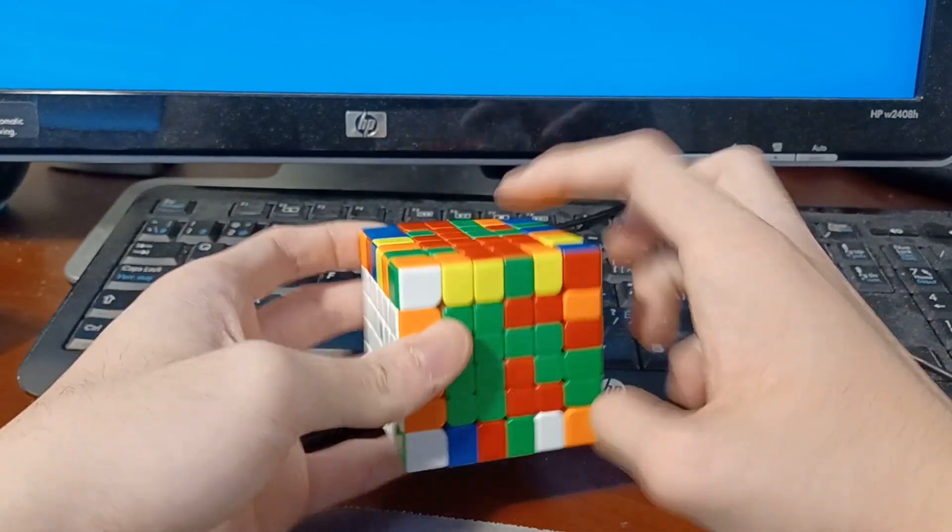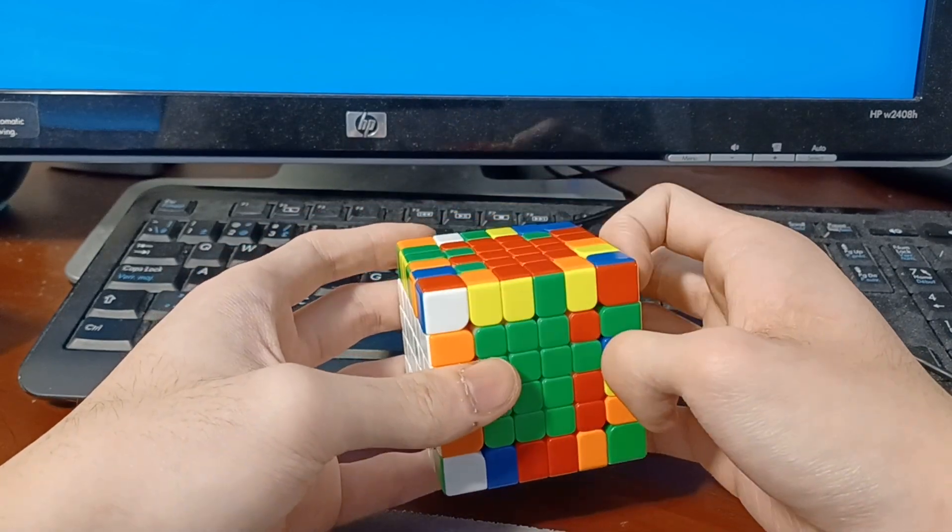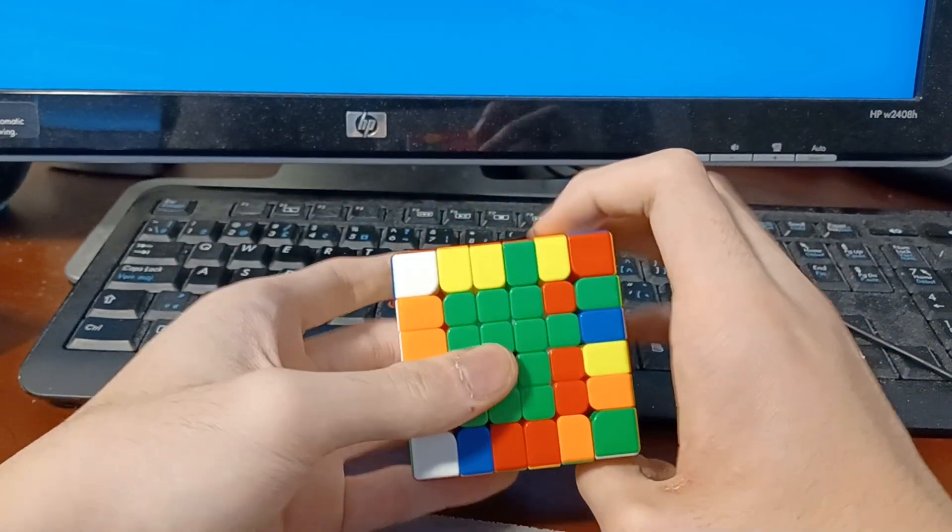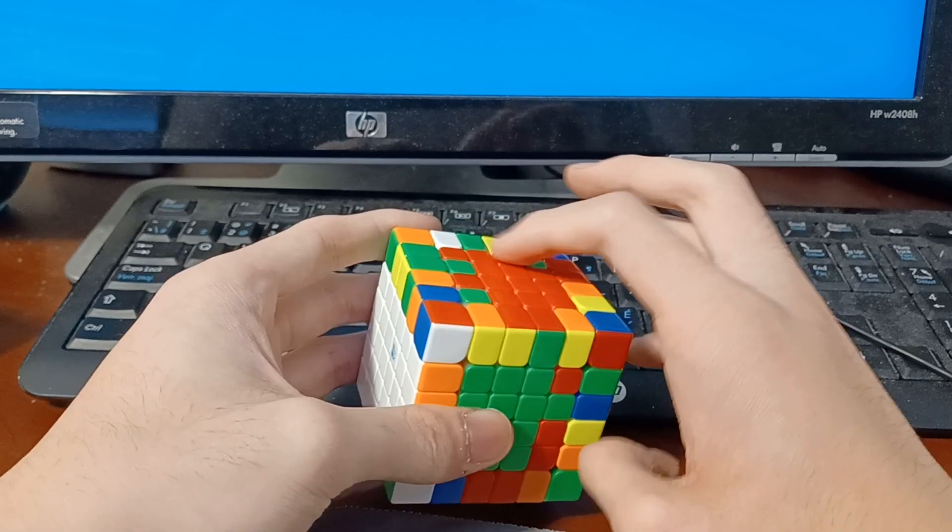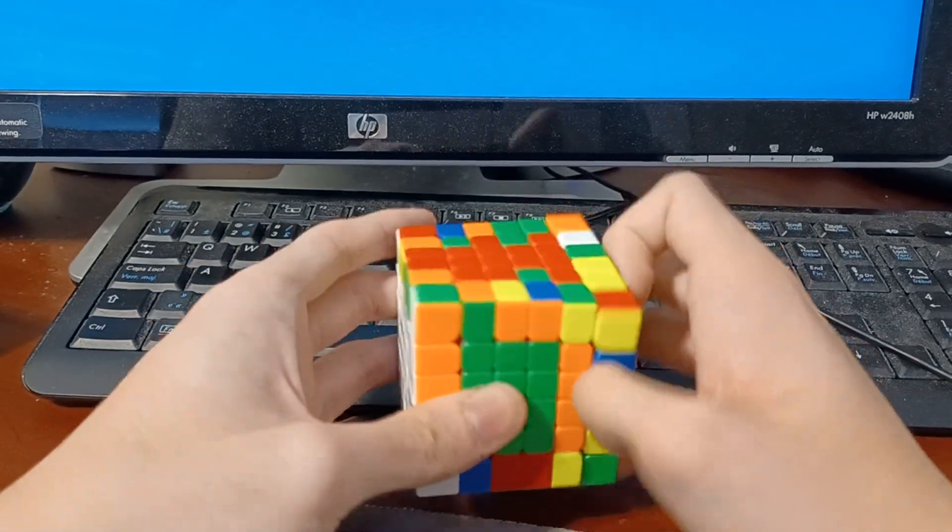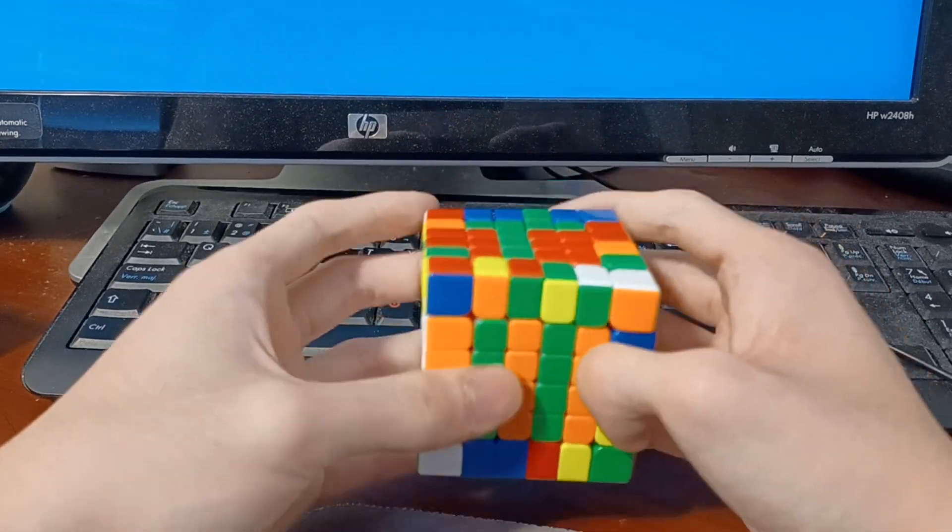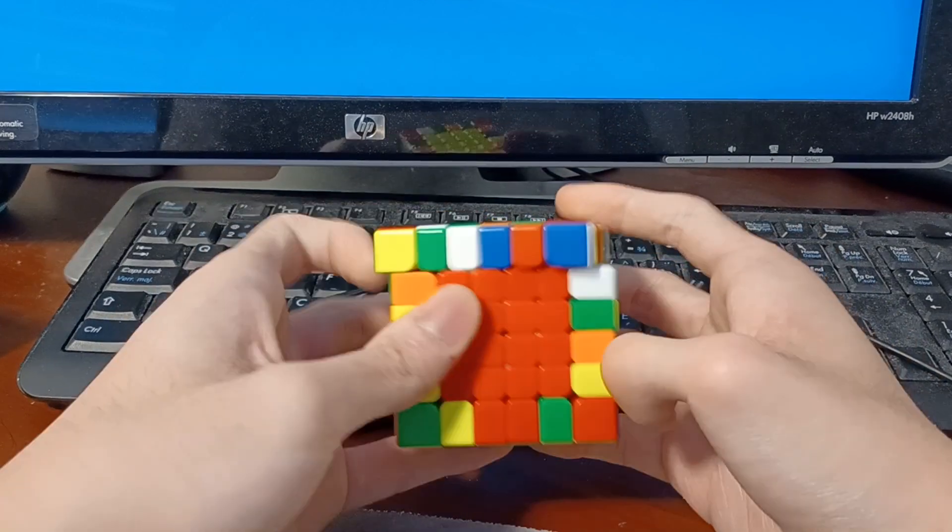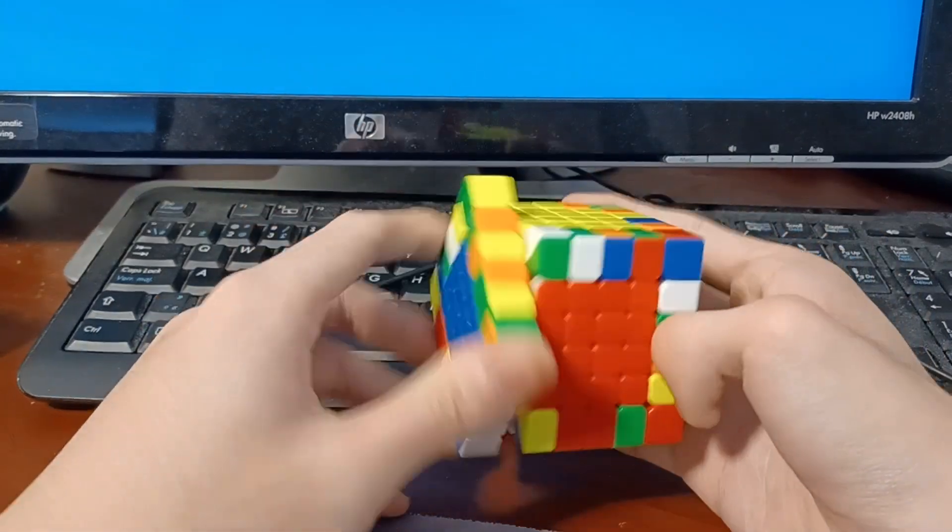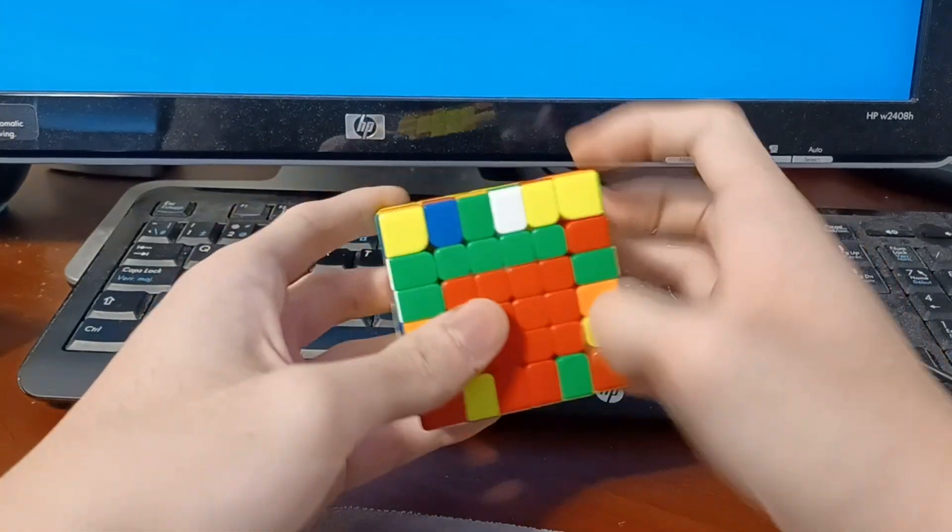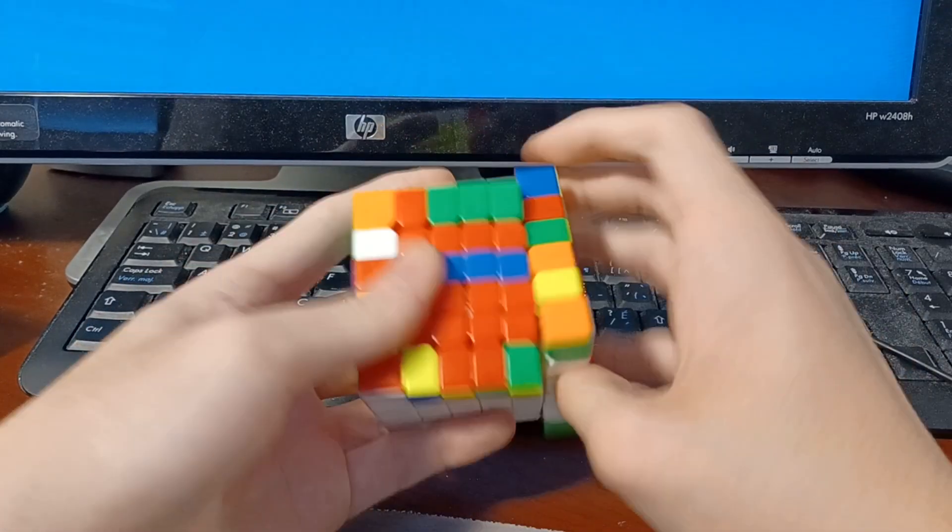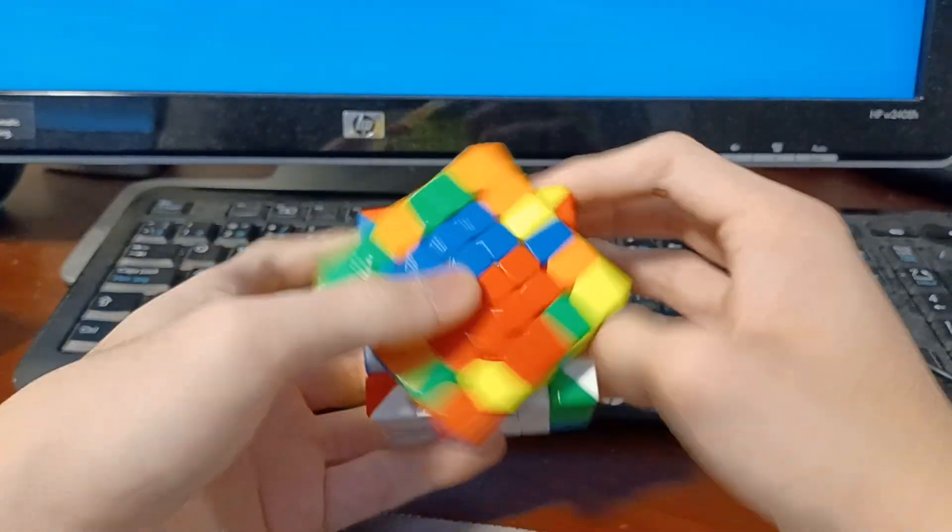Then you have this three move case, which is easy. And then, here you can cancel into a commutator after setting up this case. Like that. Rotate. See these two. This. And something like that.